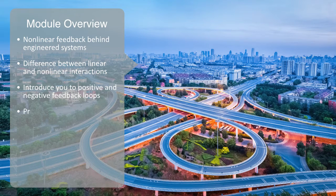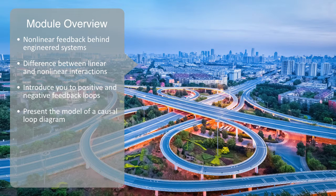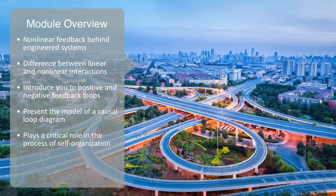We will present the model of a causal loop diagram that tries to capture this set of feedback loops driving a system's behavior. Finally, we'll look at how feedback plays a critical role in the process of self-organization and the emergence of distributed coordination.